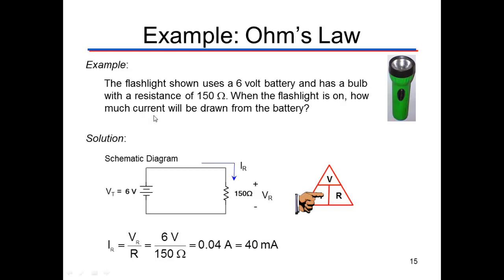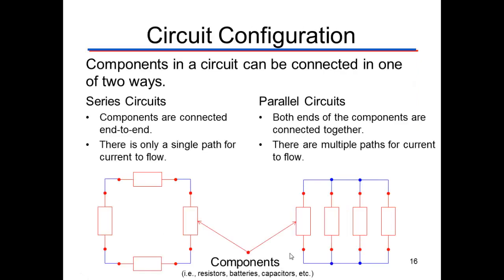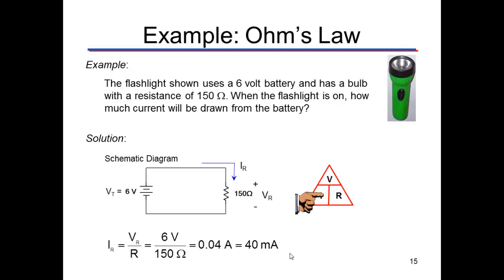That means we want to know V divided by R from our triangle. So that's 6 volts divided by 150 ohms. We get 0.04 amps, or 40 milliamps. I hope that helps you with a quick review of a couple of concepts associated with electrical circuits.